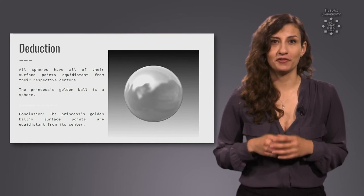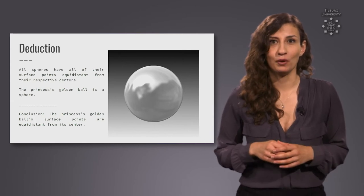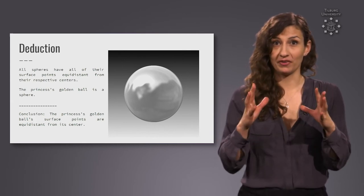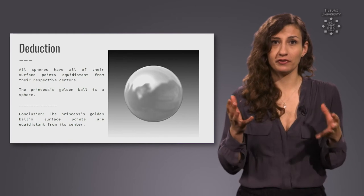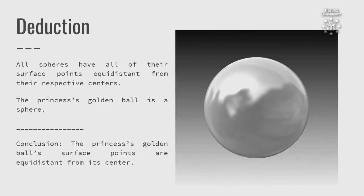Let's go back to our definition of spheres, and let's use a bit more formal logic here. We said that a sphere is a figure whose every surface point is equidistant from its center. That means for all spheres, it is true that all of their surface points are equidistant from their respective centers.